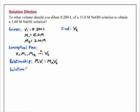Starting with the equation M1V1 equals M2V2, we will first solve for the variable V2. So V2 is M1V1 divided by M2.